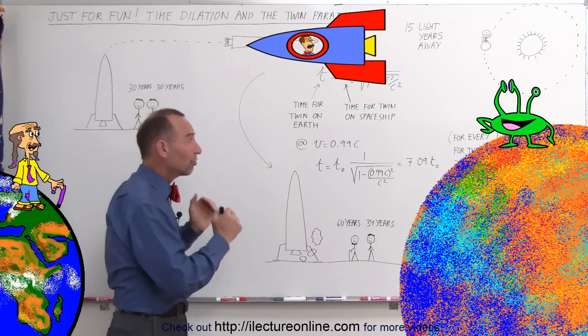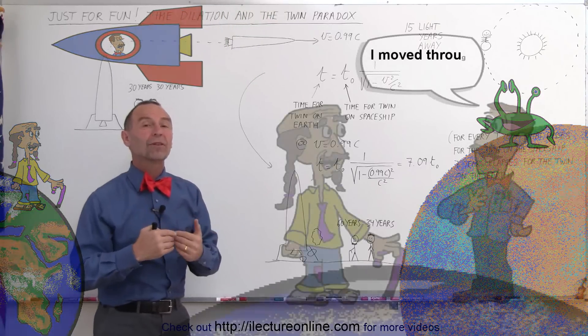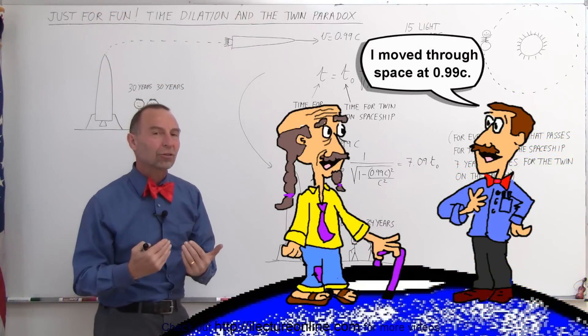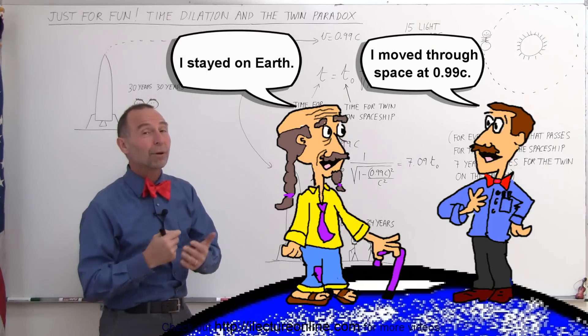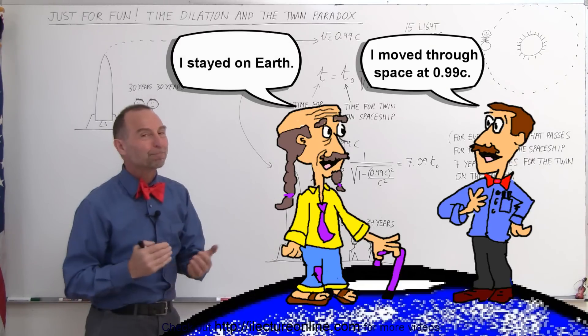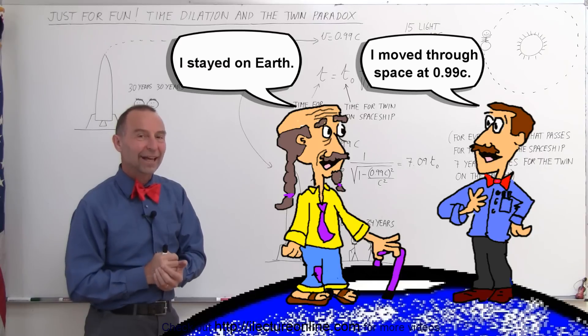The person who travels through space at nearly the speed of light is going to experience a time dilation, not the person left on the Earth. And so that's how the twin paradox was solved. And that's the twin paradox in time dilation.